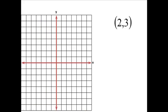So, for instance, if I had a point (2, 3), I go 2 to the right and up 3. Here's my point. That would be in quadrant number 1.